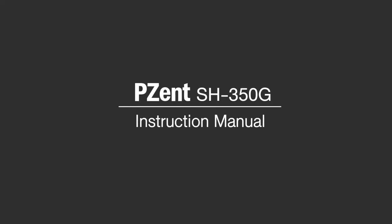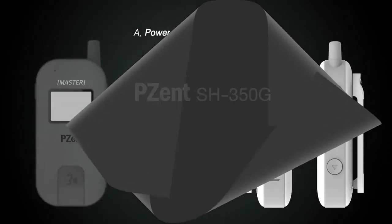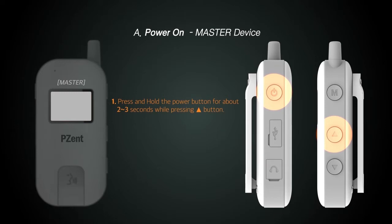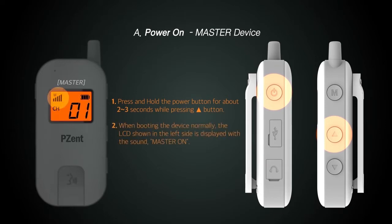This is the user manual for the WiiWi SH350GM. This is how to turn on the master unit. Hold down the volume up button and press the power button for about 2 seconds. Master mode is executed with the sound of master on.